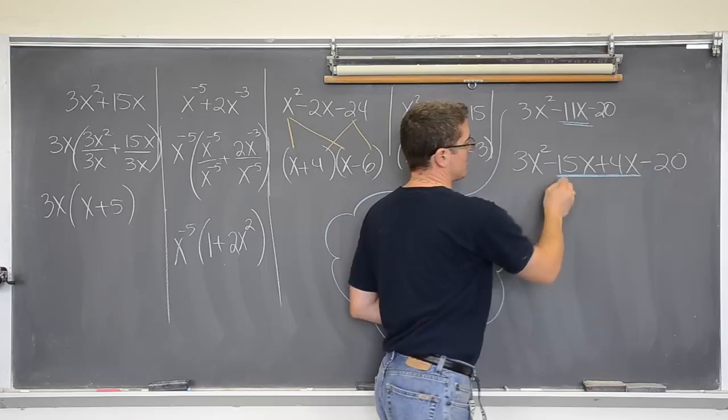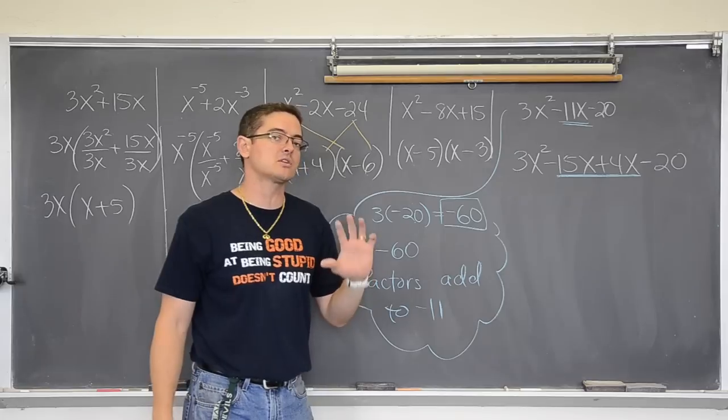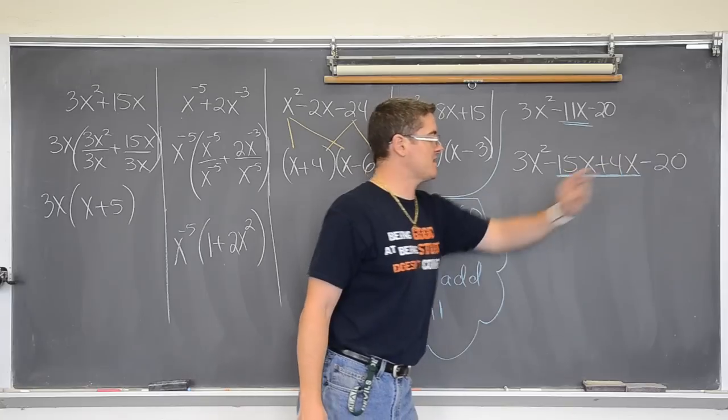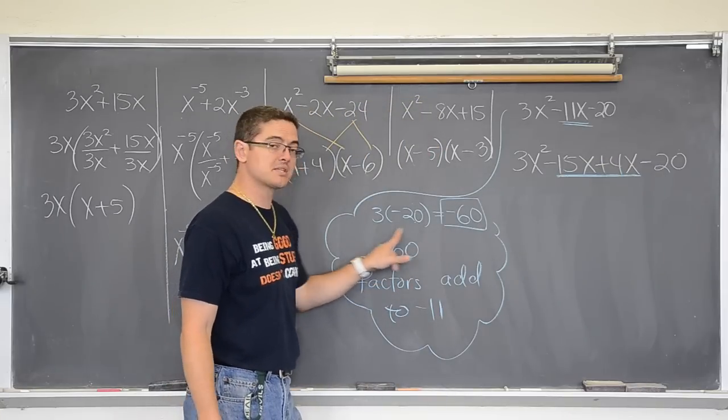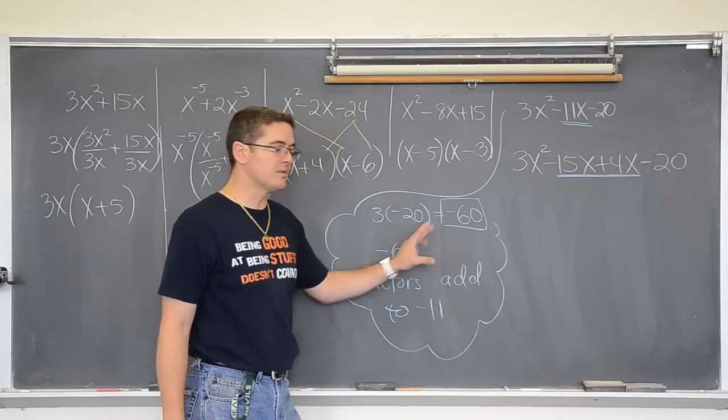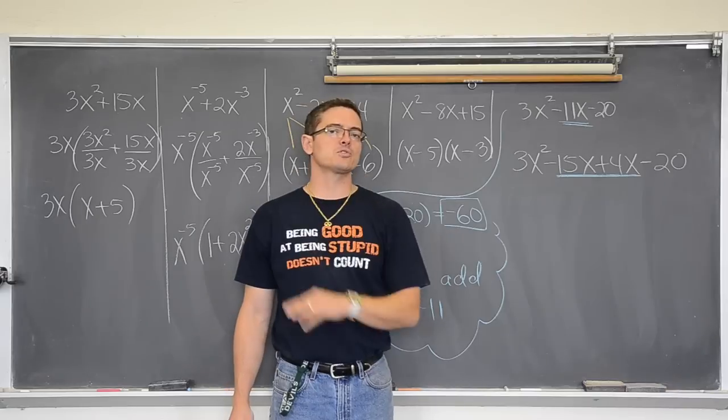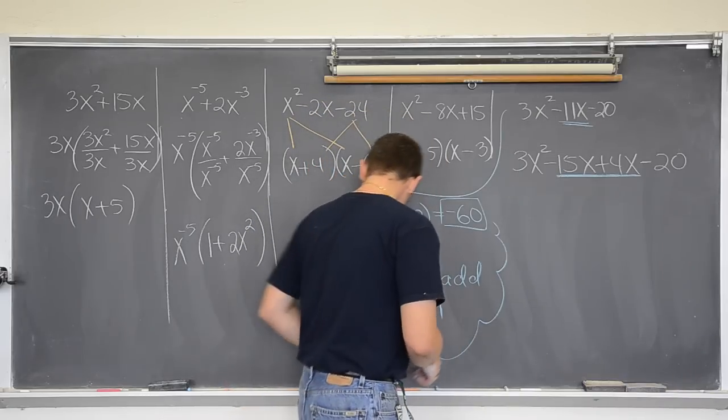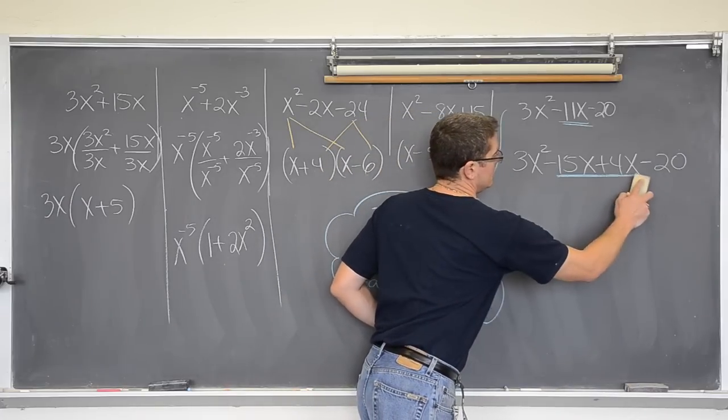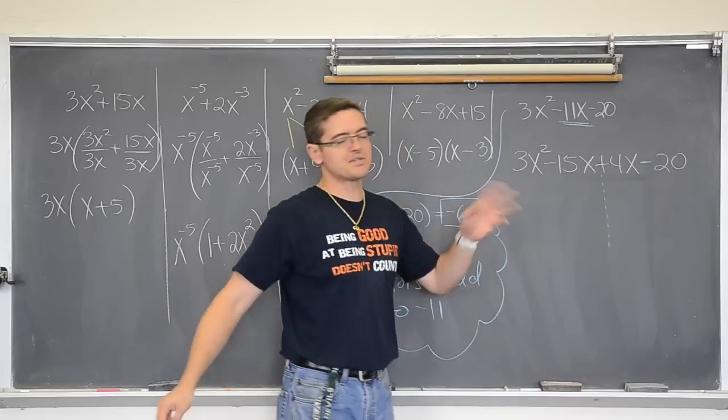Again, these two middle terms still add to negative 11, right? So, I have not done anything that has made the expression look different. And the negative 15 and the positive 4 came from factors of 60 that added to the middle term. Now I am done with my scratch work. Now I have 4 terms instead of 3. What do you do when you have 4 terms? You do something called factor by grouping. When you factor by grouping, you work with the first two terms and the last two terms temporarily.